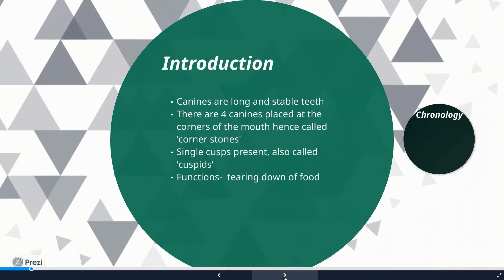Taking a general introduction of both canines — mandibular as well as maxillary — canines are long and stable teeth. They are placed in the corners of the mouth, and there are four canines. Because they are placed in the corners of the mouth, they are also called the cornerstones. These canines have only a single cusp, which is why they are called cuspids, as opposed to premolars which usually have two cuspids and are called bicuspids. The basic function of the canines is tearing food.